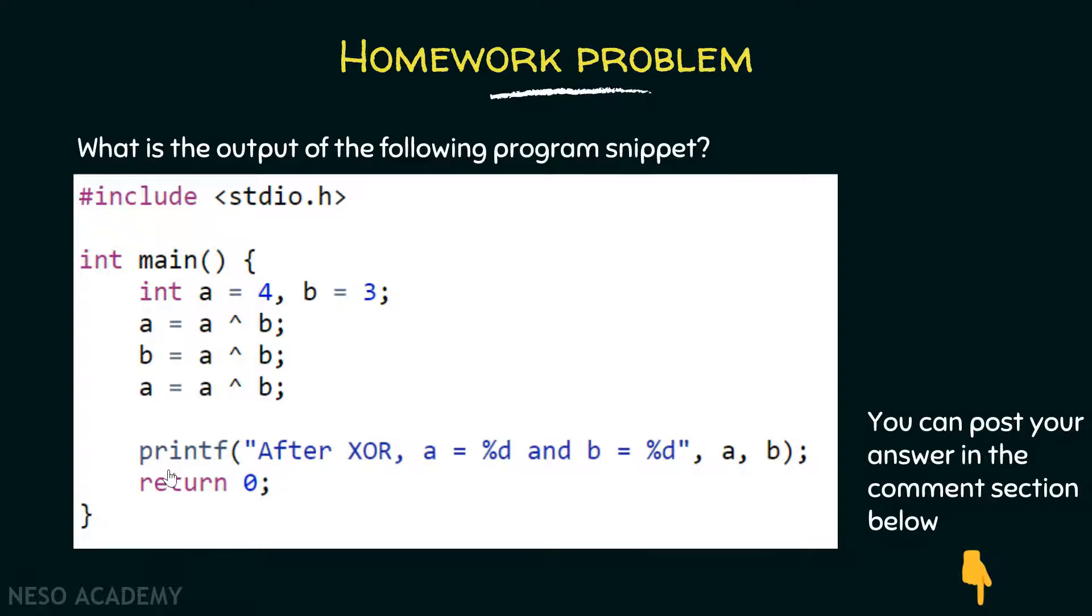And finally, with the help of this printf function, we are trying to print after XOR, a is equal to %d and b is equal to %d. As these are the placeholders, they are getting replaced by the values of the variables a and b finally. So here, we are trying to print the values of a and b.